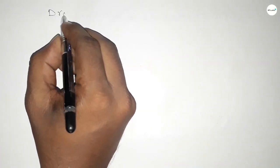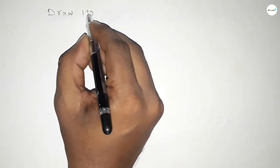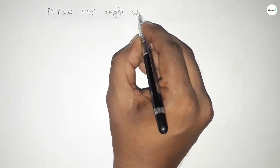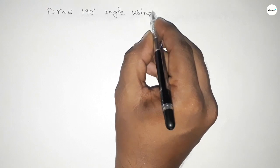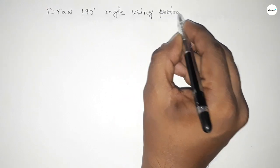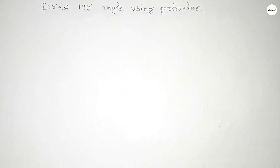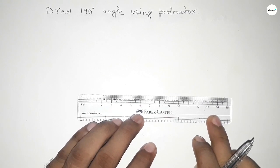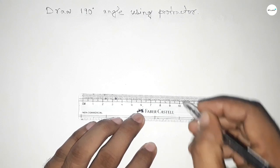Hi everyone, welcome to SSJ classes. Today in this video we have to draw a 190 degree angle by using a protractor. So let's start the video. First of all, we have to draw a line of any length here.